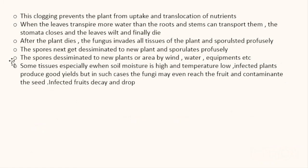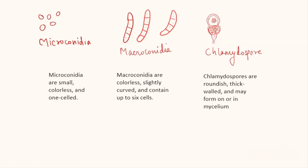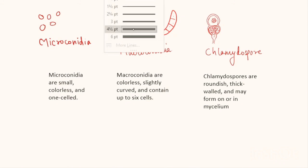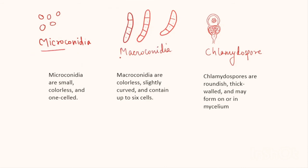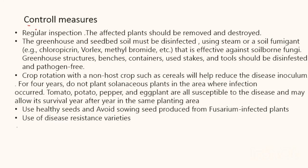This fungi has three types of spores. Microconidia, as the name suggests, are very small, colorless, one-celled spores. Macroconidia are larger than microconidia, multicellular, colorless, and slightly curved — generally made up of about four to six cells. Chlamydospores are roundish, thick-walled, and may form in or on the mycelium.